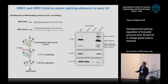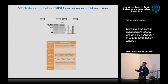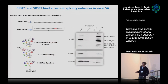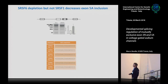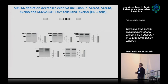Pull-down analysis showed that the enhancer region was bound by SRSF6 and SRSF1. Functionally, SRSF6 depletion — but not SRSF1 — decreased exon 5A inclusion. This region is conserved in all sodium channels, and SRSF6 depletion decreased exon 5A inclusion in all channels tested, indicating a conserved exon splicing enhancer in 5A across the family. Knocking down SRSF6 in SCN3A confirmed loss of 5A inclusion.